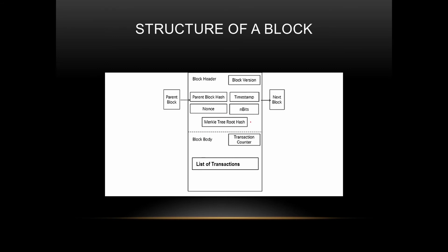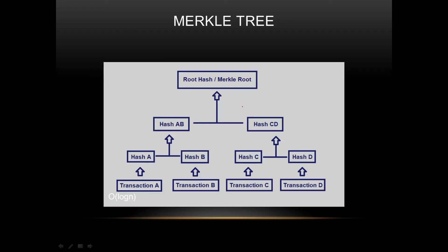The block header also contains the Merkle tree root hash, which is the root hash of the transactions in the body. In the block body, there is a transaction counter that counts how many transactions have occurred, and a list of transactions containing from, to, value, and all other details, kept in a structured transaction list.